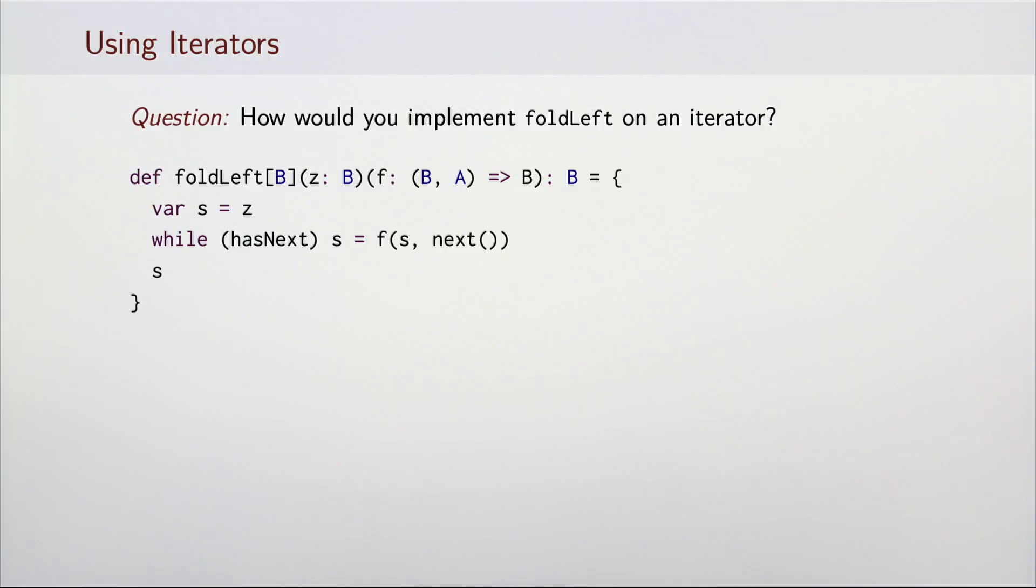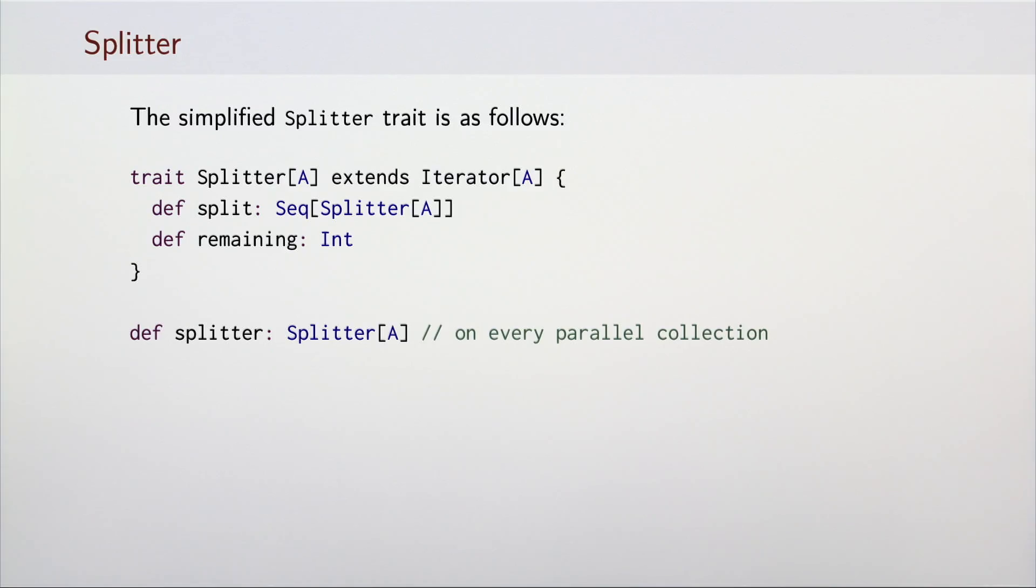Although this example is simple, you can surmise that iterators can be used to implement many other methods in a straightforward way. Splitter is a counterpart of iterator used for parallel programming. The splitter trait is an extension of the iterator trait. This snippet shows its simplified form.